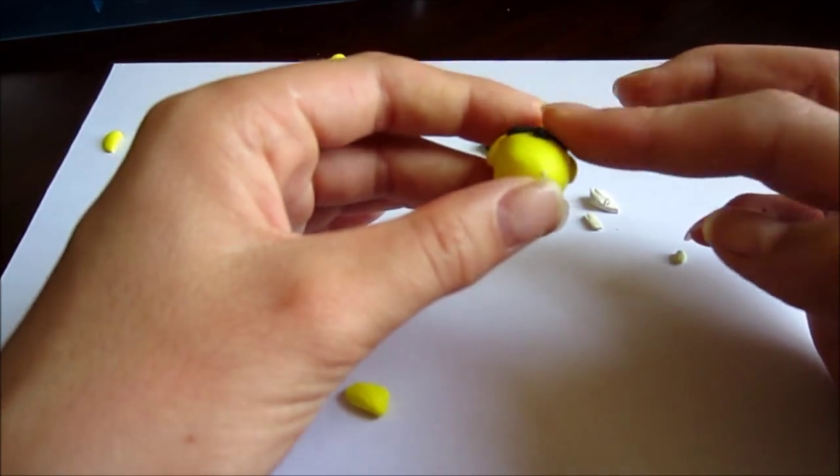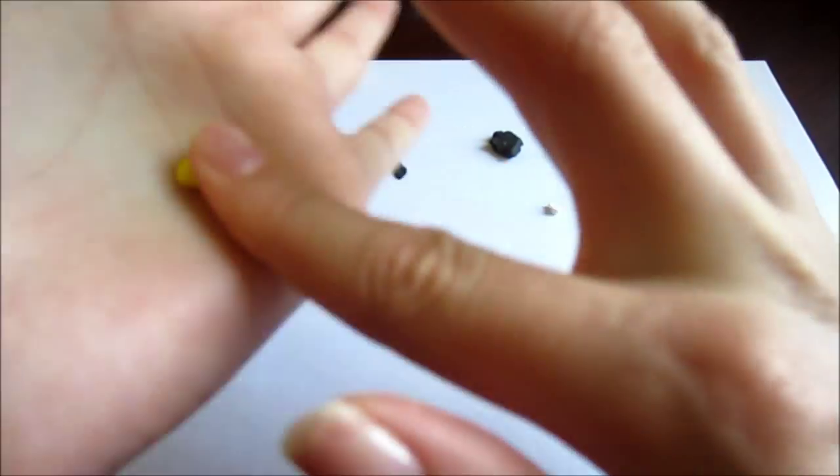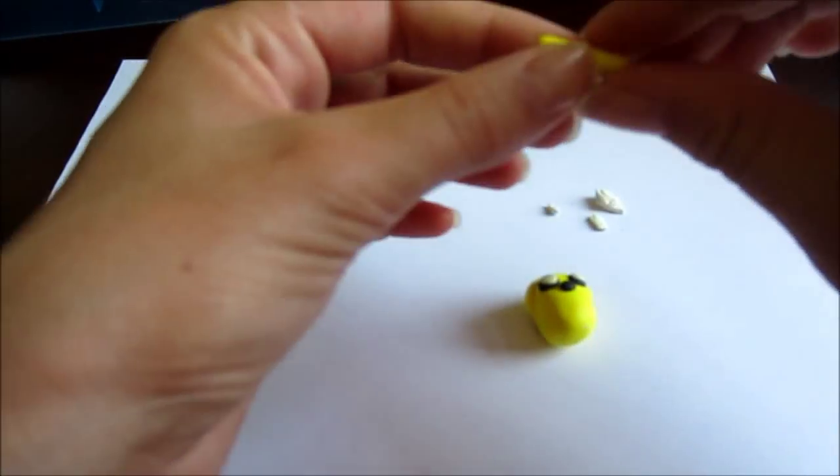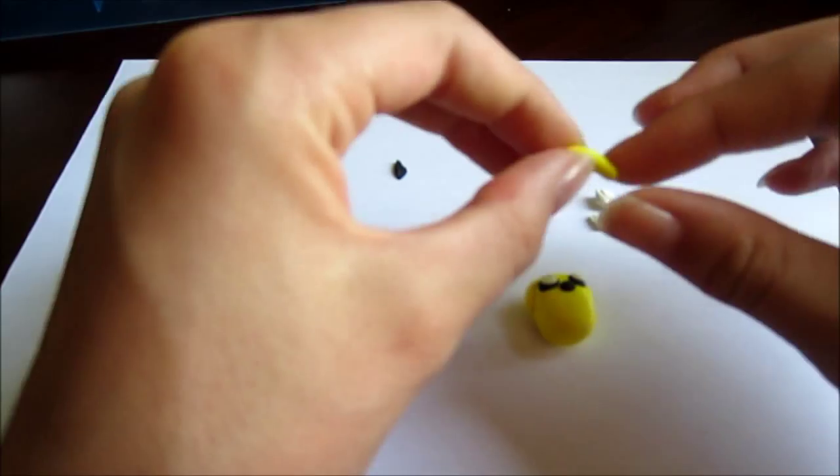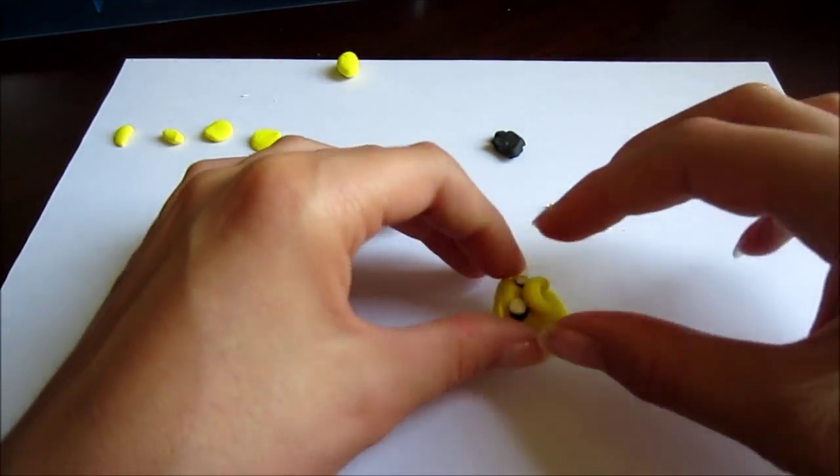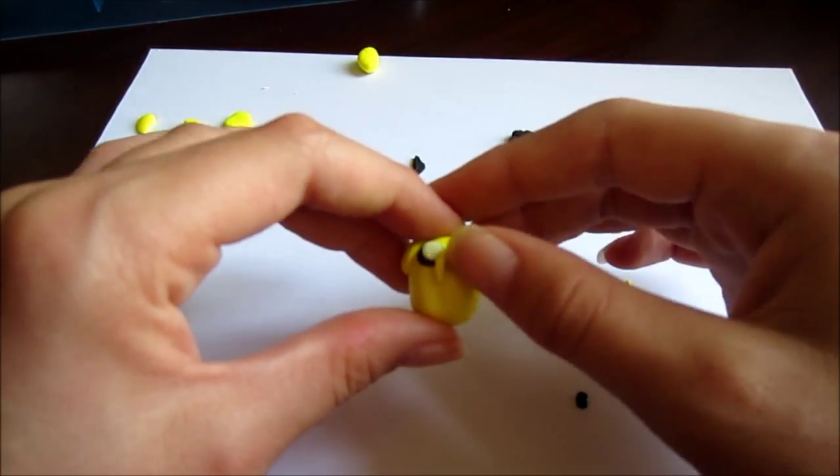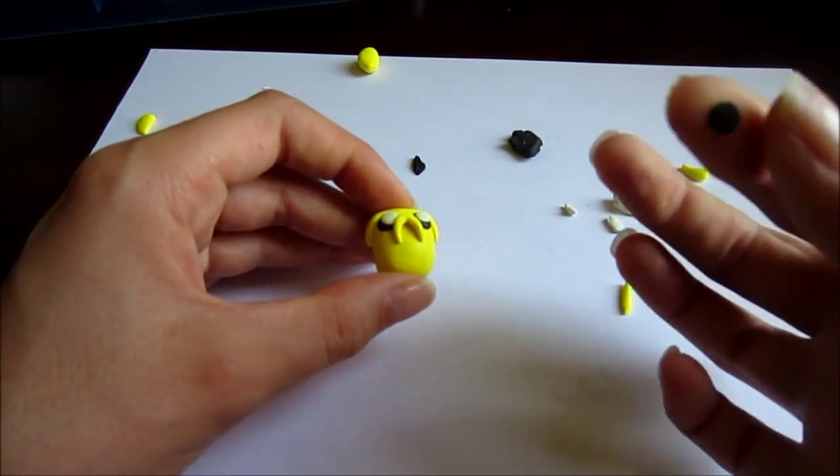Now I'm rolling out one more long cylinder shape, and this is going to be his nose, or the skin around his nose. I'm just playing with the shape, trying to figure it out, and then I put the black actual nose part on.